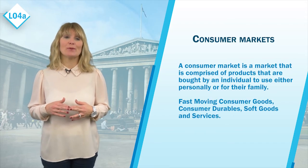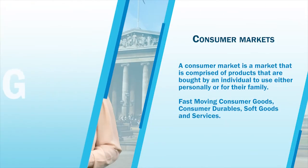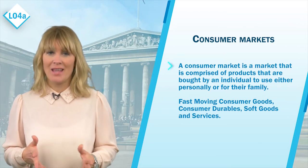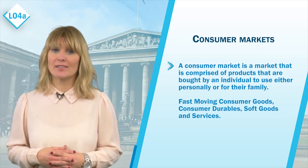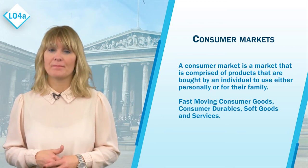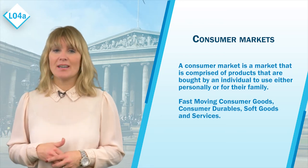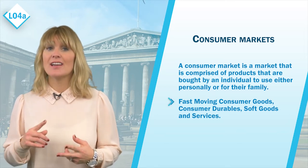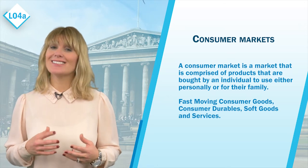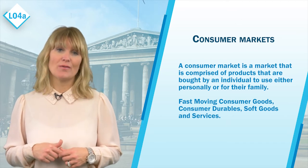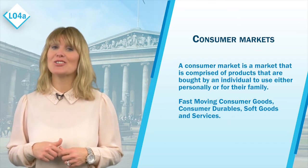The first thing we're going to look at in this section is the different types of consumer markets that exist. A consumer market is a market comprised of products that are bought by an individual to use either personally or for their family. Consumer markets can be categorized into four areas: fast-moving consumer goods, consumer durables, soft goods, and services. However, in this section we're going to focus on the first two: fast-moving consumer goods and consumer durables.